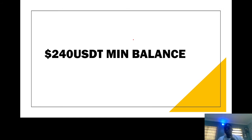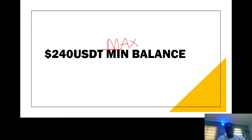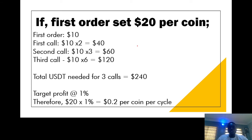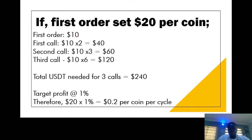The next scenario is when you have 240 USDT as maximum balance. When you have this as maximum balance, your first order should be ten dollars. The order will then be times two of your initial capital, which would be forty dollars, then times three which would be thirty dollars.